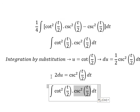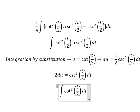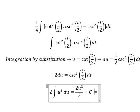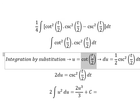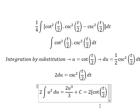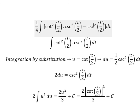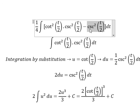This term we change for 2u. This term we change for u, giving us u². The integral of u² gives u³/3. For the last term, the integral of negative cosecant²(t/2) gives 2cot(t/2).